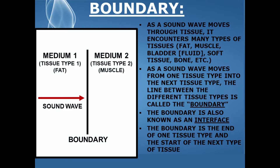The diagram shows what a boundary is. Medium 1 is tissue type 1 — for purposes of this demonstration, we'll call this fat — and medium 2, which is tissue type 2, we'll call muscle. The sound wave travels from medium 1, which is fat, encounters a boundary, which is the dividing line between the two types of tissues, and then enters the second medium type, which is muscle.